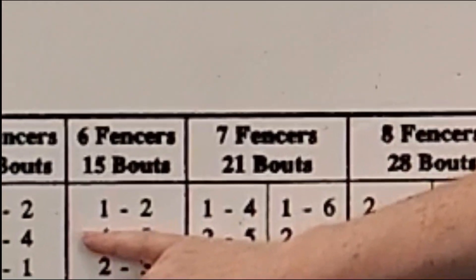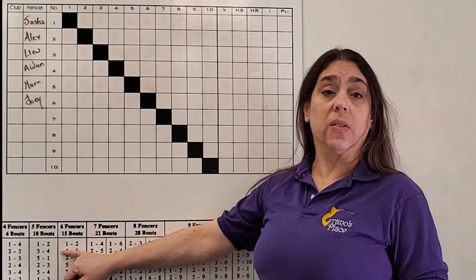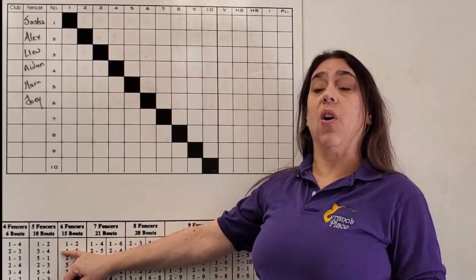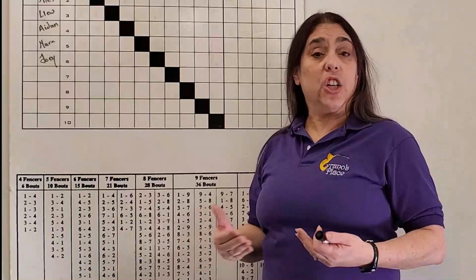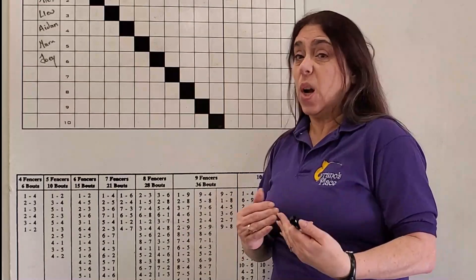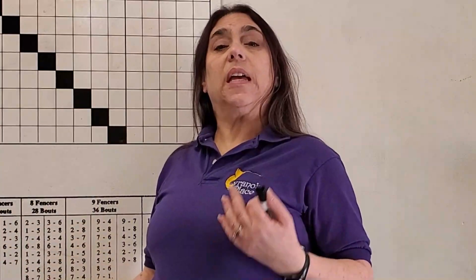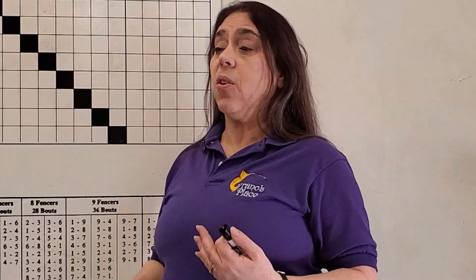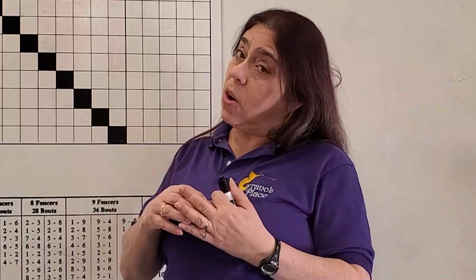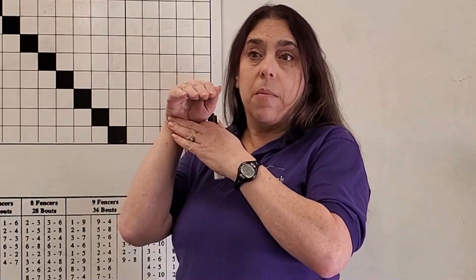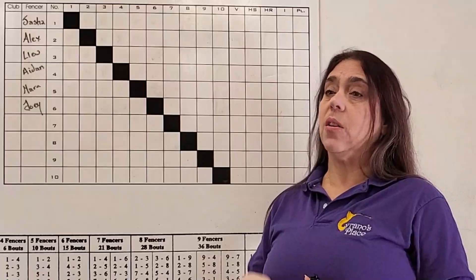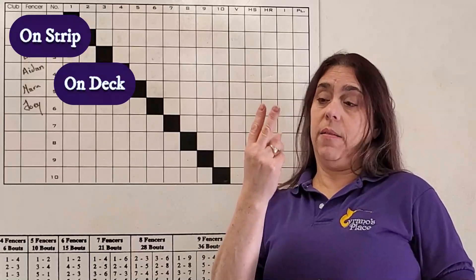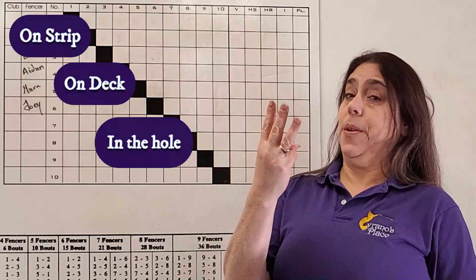The first bout to be fenced in a pool of six will be numbers one and two, in this case Sasha and Alex. As Sasha and Alex are called on strip, the next bout, which is four and five, will be called on deck. What does on deck mean? It means like in a ship, you're on deck and ready to go but you're not going yet. The third bout would be considered in the hole. In the hole is again a reference to being in a ship where you're in the whole ship waiting to get on deck.